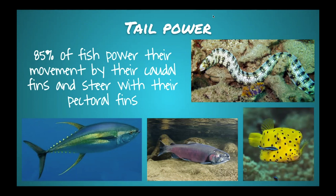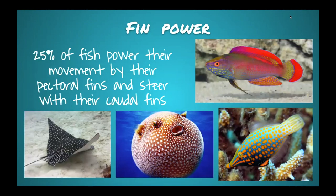The other 25% of fish use their pectoral fins to power themselves and steer with their tail — the opposite. These fish are more commonly found in shallow waters or coral reef environments where they need more control of their bodies and don't have to travel as fast.